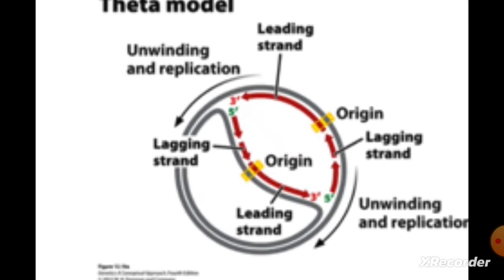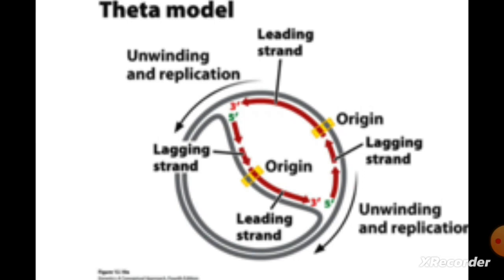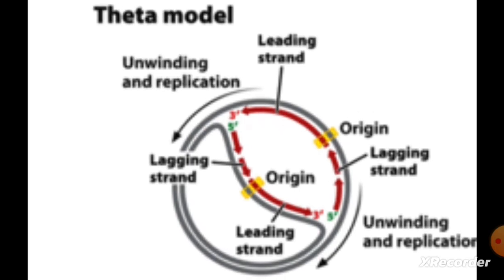Whether unidirectional or bidirectional depends on whether the replication fork moves in one direction, visualized using an electron micrograph. An electron micrograph is an image produced by bombarding a specimen with a finely focused electron beam with acceleration voltage under vacuum. The replication bubble expands in both directions, indicating bidirectional replication.